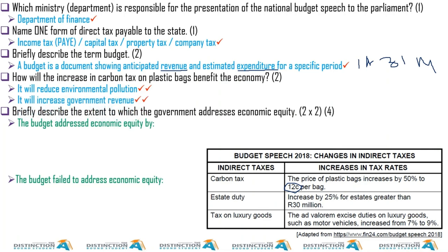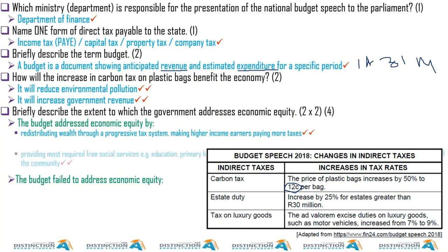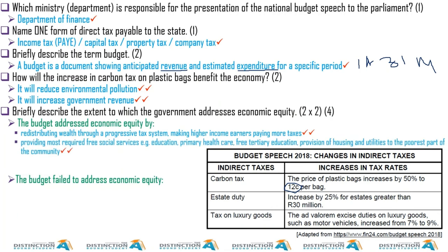Briefly describe the extent to which the government addresses economic equity. Credit the South African government for its systems that try to bridge the gap between the haves and the have-nots. The budget addresses economic equity by: redistributing wealth through a progressive income tax system, making higher income earners pay more tax than low income earners; and providing free social services such as education, primary healthcare, free tertiary education, and housing to the poorest communities.